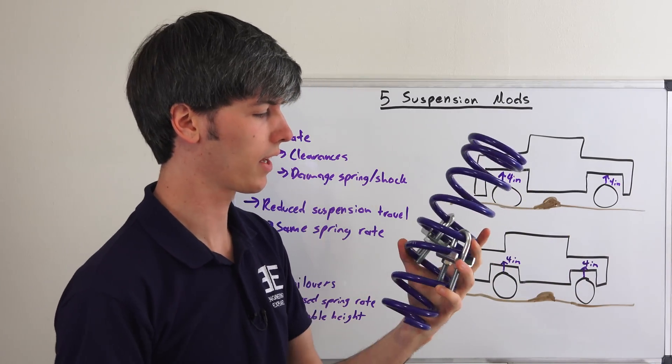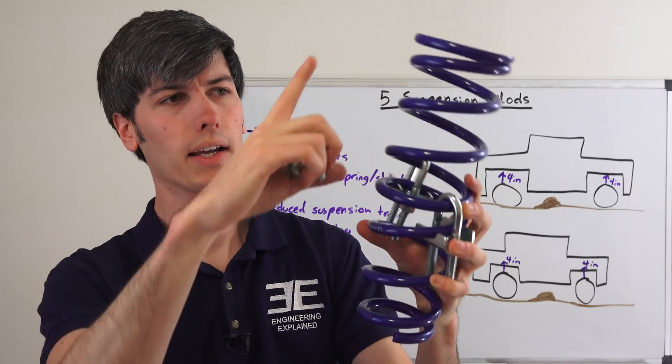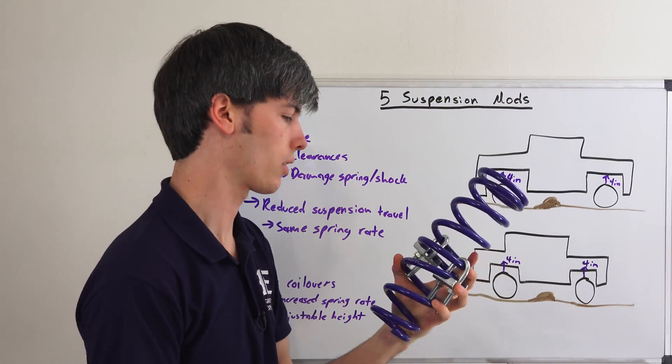The idea is you just clamp down on the spring, and so that reduces the spring height so you can lower your car.